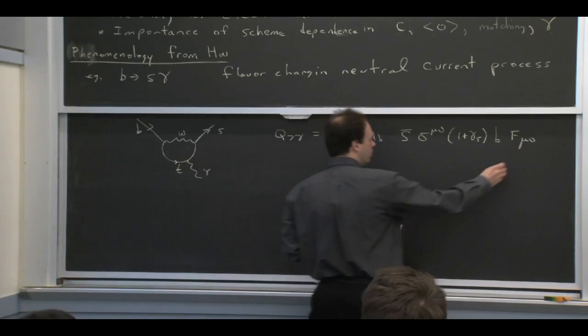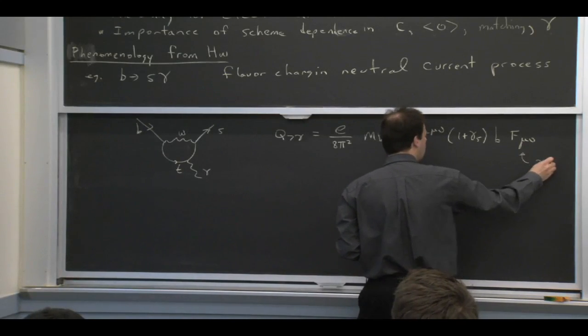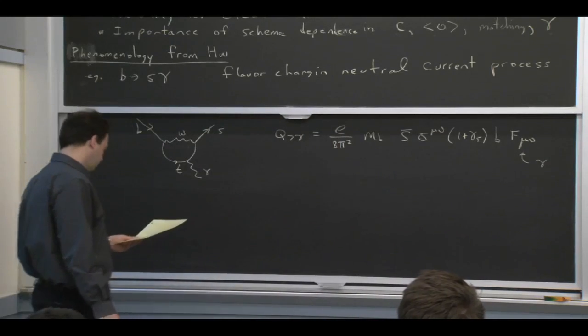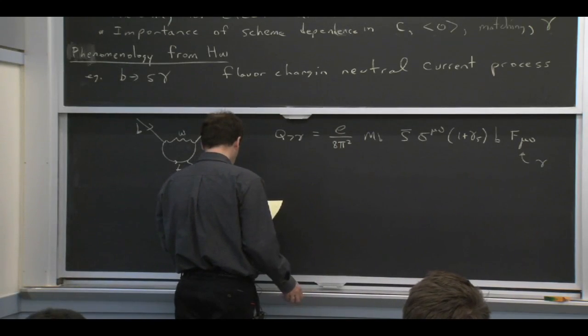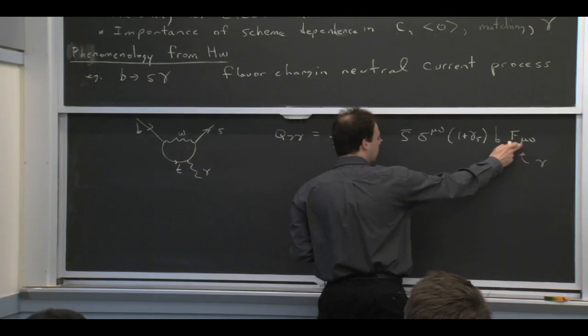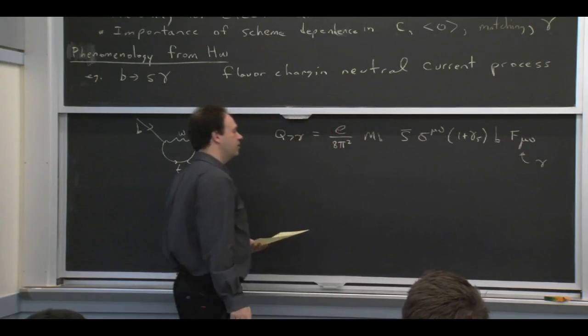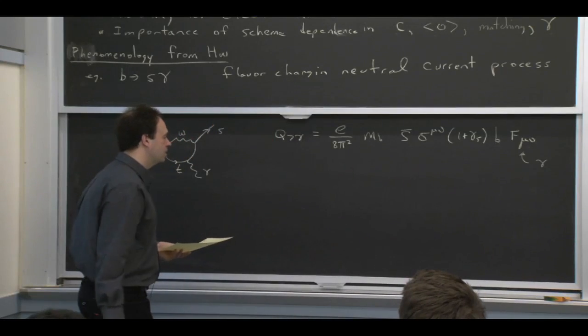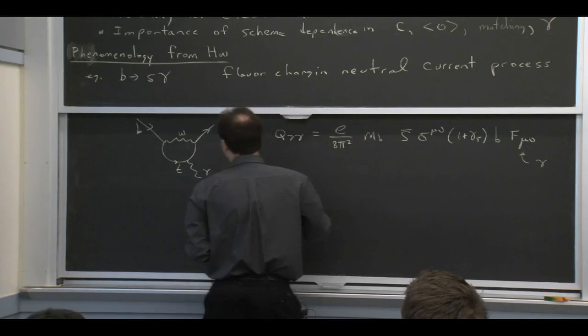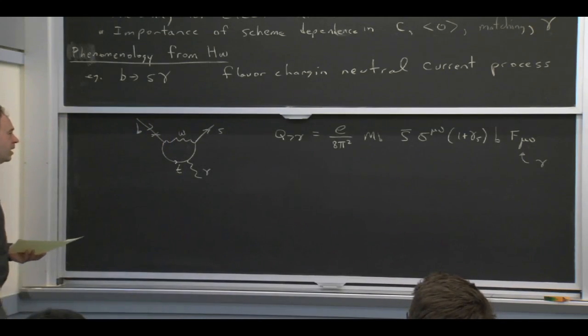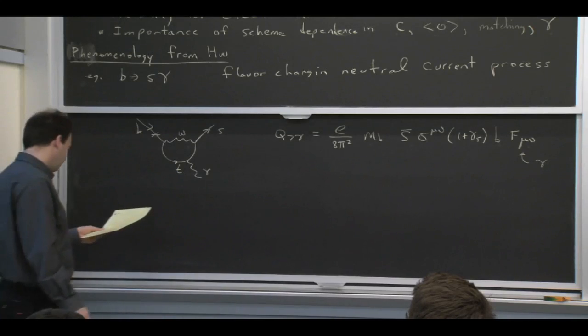So here's what you would call a magnetic dipole operator, Q7γ. Couples directly to the photon, which is in the F mu nu, and it takes the B to an S bar. And that's an example of a higher dimension operator. This is dimension 2 and then plus 3 there, so that's 5. There's a factor of the B quark mass that just comes in because of the chiral structure of the operator, which you can think of as there needs to be a mass insertion here. You need one factor of that mass in order for the diagram not to give 0.